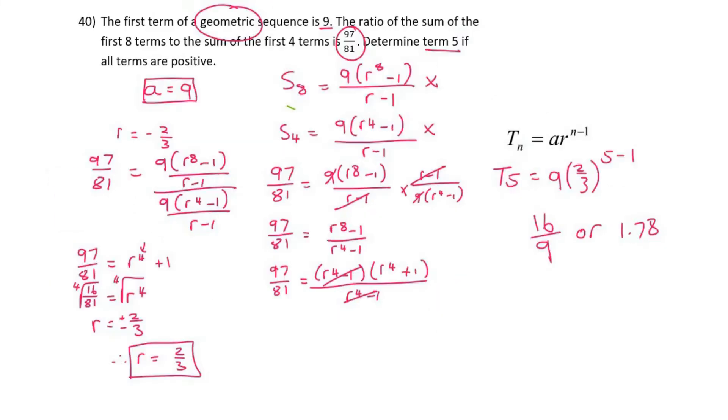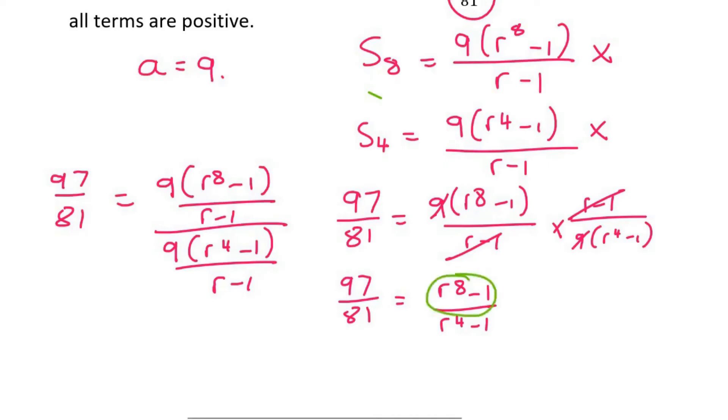Now, we could think of the top one, this one here, as a difference of squares. We could also do difference of squares with the bottom one, but it's not necessary. Let me show you why. If we do difference of squares with the top one, we're going to get 97 over 81 is equal to (R^4 minus 1) and (R^4 plus 1). That's difference of squares. Then we have R^4 minus 1 here. Those cancel. Oh, it's working out nicely. I was a bit concerned just now. So 97 over 81 is equal to R^4 plus 1.